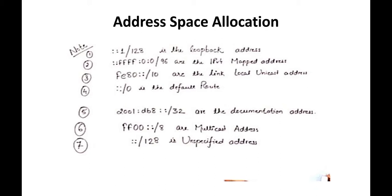First, the address space allocation. From the last lecture we saw the types of addresses: unicast, multicast, and the types of unicast addresses including local unicast and link-local. Here we discuss some addresses used for special purposes. The address ::1/128 is a loopback address.